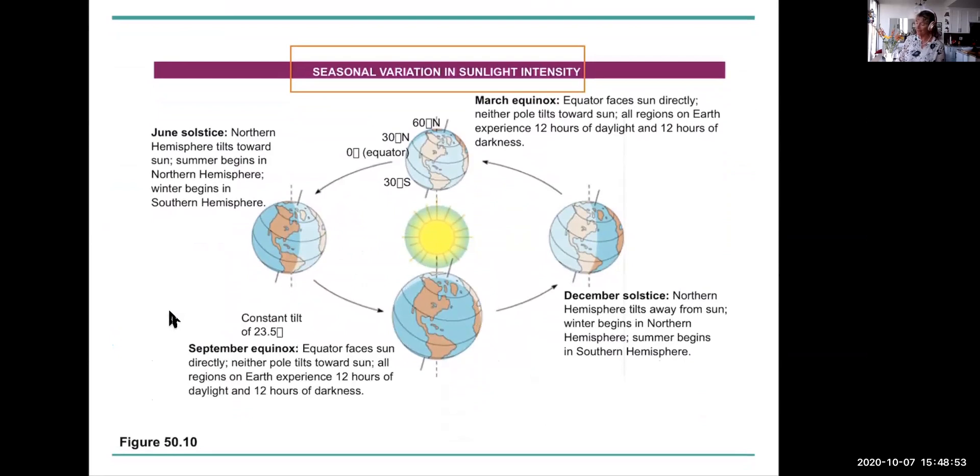So that seasonal variation in sunlight intensity leads to various daylight hours. At the March equinox, the equator faces the sun directly, neither pole is tilted toward the sun, and all regions on earth have 12 hours of daylight and 12 hours of darkness. That's the March equinox.